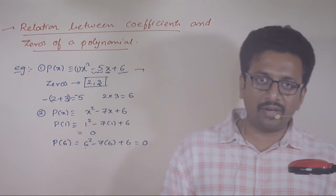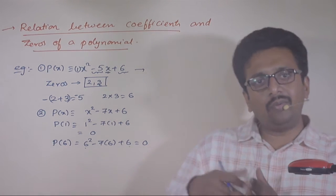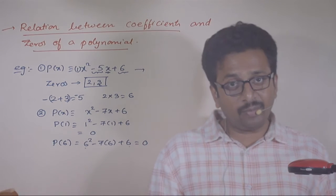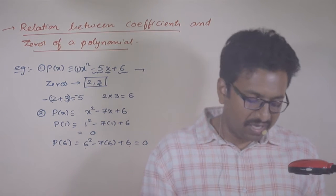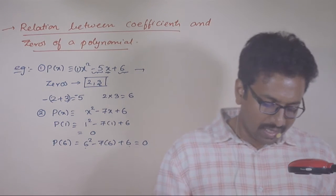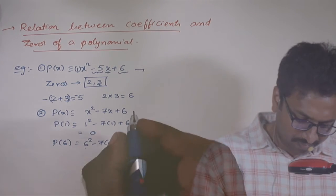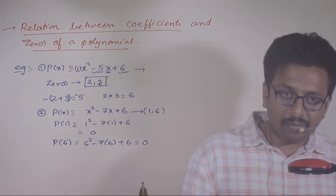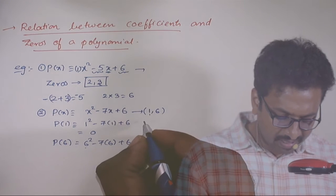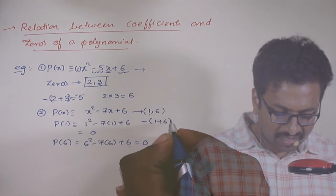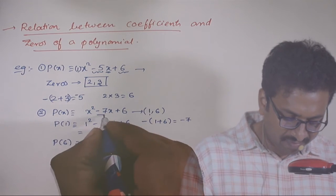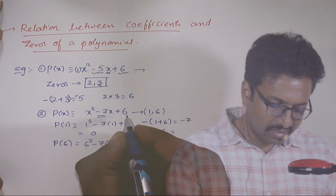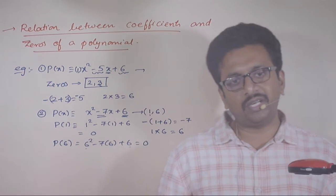How do you find the zeros of a quadratic polynomial? Set it equal to 0 and solve it. So if 1 and 6 are the zeros, let us check: 1 plus 6, minus of 1 plus 6 is minus 7, which is the coefficient of x. And 1 into 6 is 6, which is the constant term.